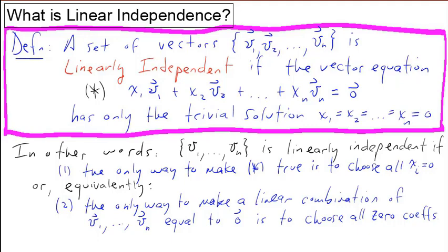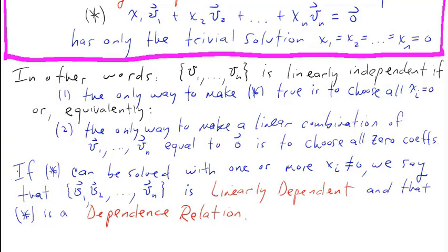If star can be solved with one or more of the xi not equal to 0, we say that the set v1 down to vn is linearly dependent and that star is a dependence relation.